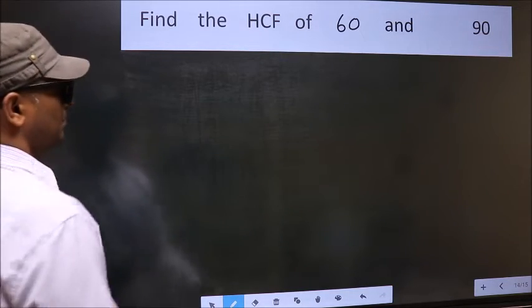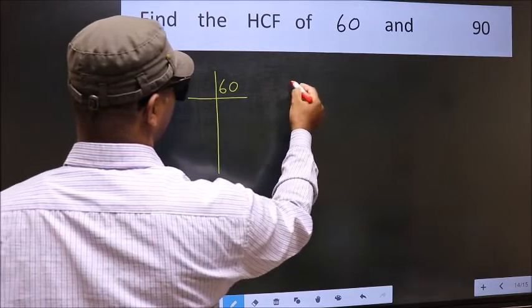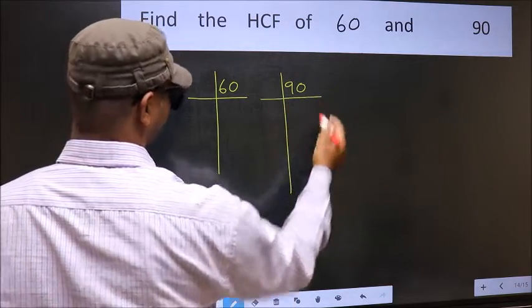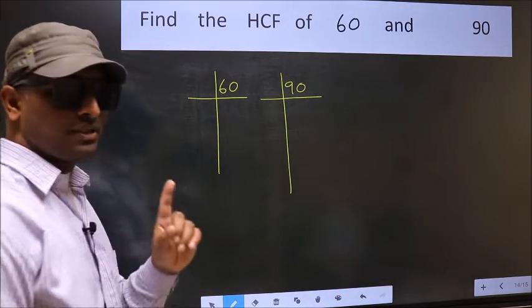What I mean is 60 and 90. This is your step 1.